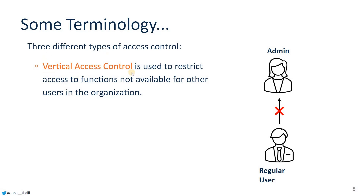The first type is vertical access control. Vertical access control is used to restrict access to functions that are not available to other users in the organization. For example, an admin has different functions compared to a regular user.